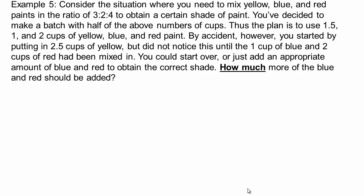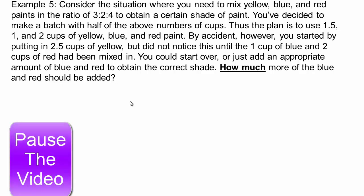Alright, try that one on your own. So you have a situation where you need to mix yellow, blue, and red paints in the ratio of three to two to four to obtain a certain shade of paint. You've decided to make a batch with half of the numbers above. So half of three would be 1.5, half of that would be one, half of that would be two. So one and a half cups to one cup to two cups of yellow, blue, and red paint accordingly. Alright, now by accident, you started by putting in two and a half cups of yellow, and did not realize this until the one cup of blue and two cups of red had been mixed in. Should you start over or just add appropriate amount of blue and red so that you have the correct shade? So how much more blue and red should we add? That's the question. So go ahead and do that on your own. Pause the video.